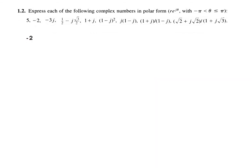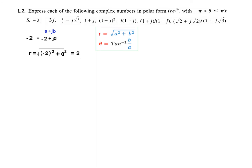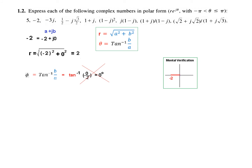Next is minus 2. We write it in the same form: minus 2 plus j0. We calculate r and calculate tan theta, which gives 0. But this angle of 0 degrees from the calculator is incorrect. Using mental math, when you plot minus 2 on the real axis it is on the negative side, meaning the angle is not 0 — it is 180 degrees.